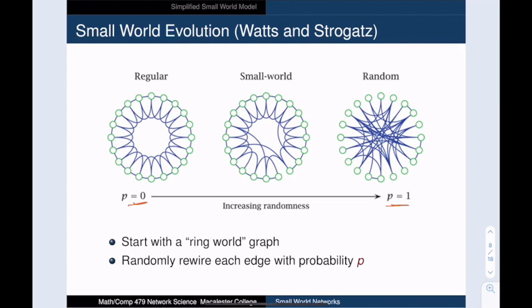Now an amazing thing happens during this process. Somewhere along the way, we reach a state where we still have a lot of the clustering from the ring world, but we have enough of the random edges to create shortcuts that gives us a diameter that is logarithmic in the network size.